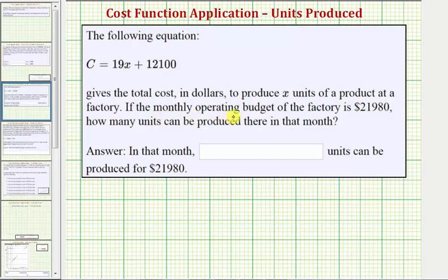If the monthly operating budget of the factory is $21,980, how many units can be produced in that month?